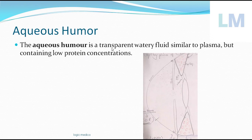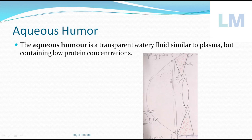Aqueous humor is a transparent watery fluid, almost similar to plasma, but it contains lower protein concentration. If protein were present in higher concentration, it would form a coagulum or cloudy precipitate upon heating — similar to a heat coagulation test. So the aqueous humor must have lower protein concentration to maintain transparency, allowing clear vision right from the cornea through the lens into the retina.